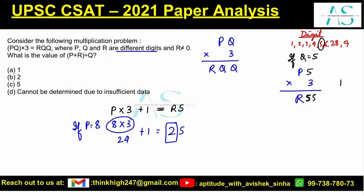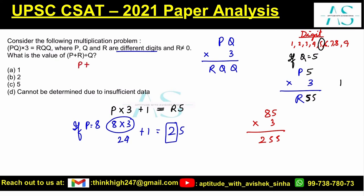So our number is 85 × 3 = 255. Let's verify: 5×3=15, carry 1; 8×3=24, plus 1 = 25. Confirmed. The equation asks for (P+R)/Q = (8+2)/5 = 10/5 = 2. The answer is 2, which is option B.